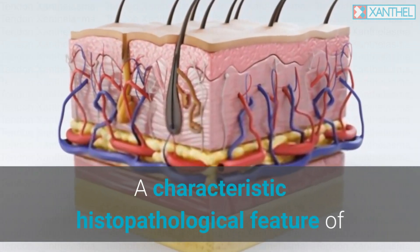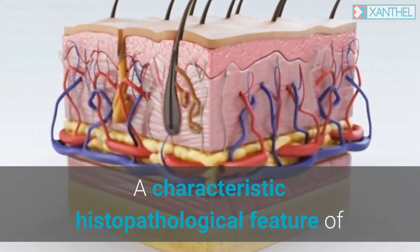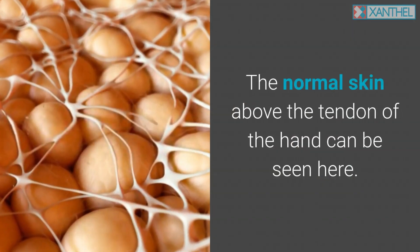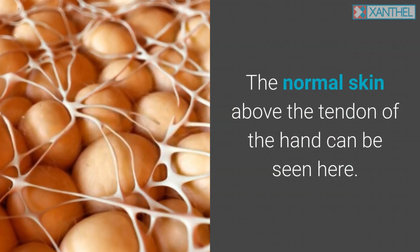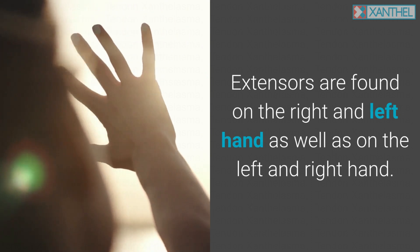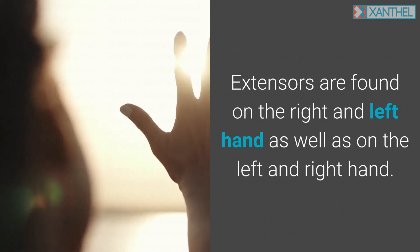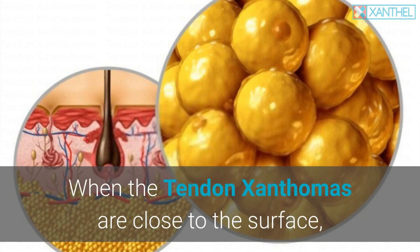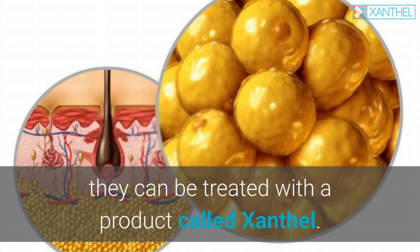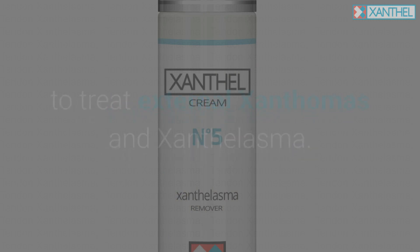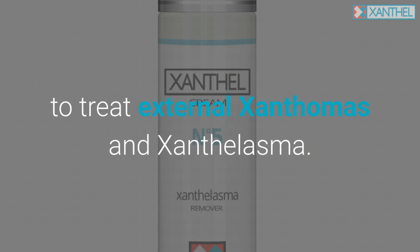A characteristic histopathological feature of xanthomas is the presence of foam cells in the dermis. The normal skin above the tendon of the hand can be seen here. When the tendon xanthomas are close to the surface, they can be treated with a product called Xanthal, a fast-acting treatment especially designed to treat external xanthomas and xanthalasma.